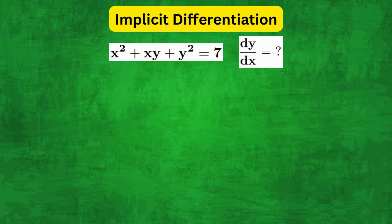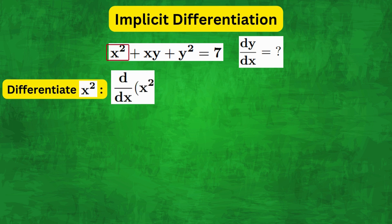Let's differentiate both sides of equation one term by term. So for x squared, we differentiate to get 2x.